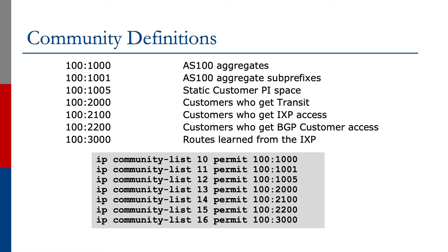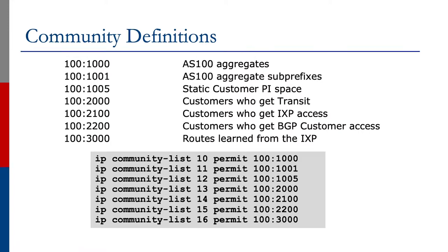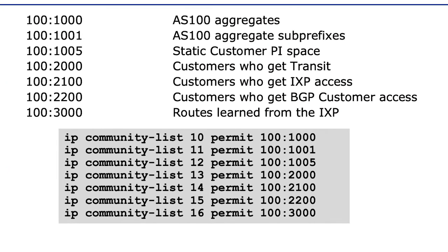This slide shows the typical community definitions, assuming we are in AS100. Community 1000 would be the aggregates out of AS100. 1001 would be the sub-prefixes that come out of AS100's aggregate. 1005 could be the static customer PI space — provider independent space. Then 2000 could be customers who get transit, 2100 customers who get access to the IXP, and 2200 customers who get BGP customer access — routes announced by other BGP customers.